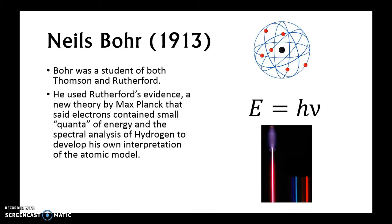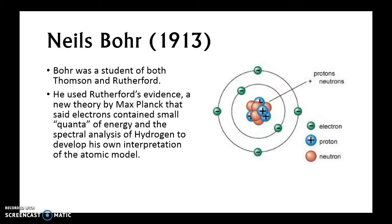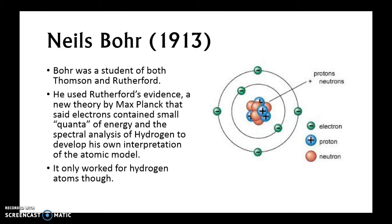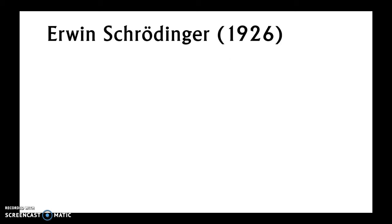From all of this, Bohr developed a newer version of the atom. It's similar to Rutherford's, except that the electrons must be in orbits because they can gain different amounts of energy and return to the ground state. He developed this idea of concentric rings — sort of like the solar system with planets orbiting the Sun. The problem is it only worked for a hydrogen atom and fell apart after that.